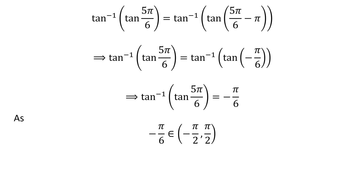So, application of properties of inverse function gives us inverse of tangent of tangent of 5 times pi upon 6 is equal to minus pi upon 6, as minus pi upon 6 belongs to the open interval of minus half of pi and half of pi.